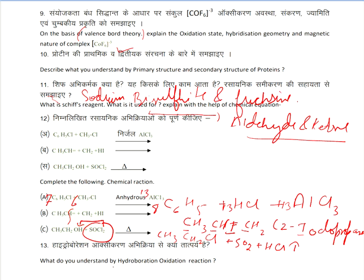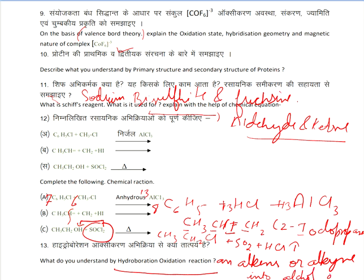Next question: what do you understand by hydroboration oxidation reaction? It is a two-step hydration reaction that transforms an alkene or alkyne into an alcohol or aldehyde. For example, propene on hydroboration oxidation gives propan-1-ol.